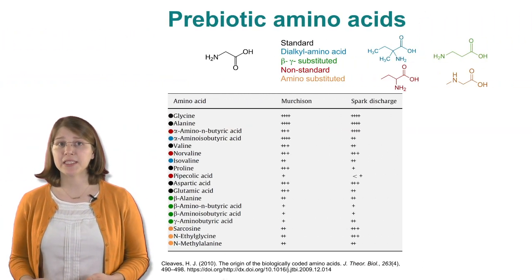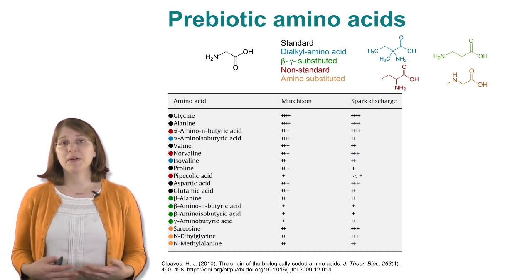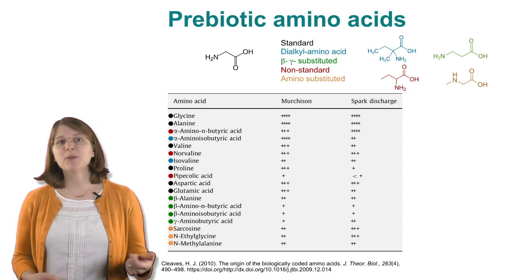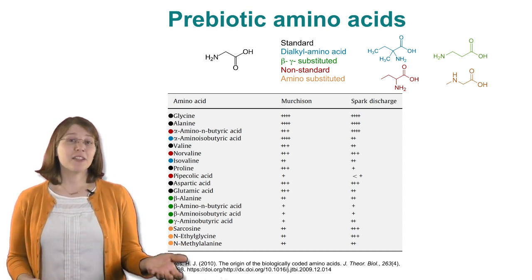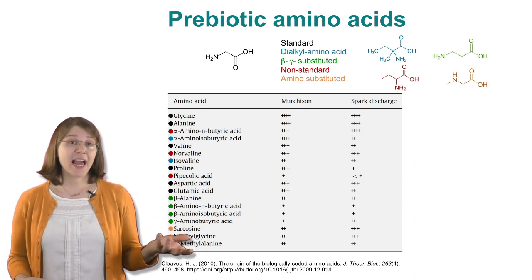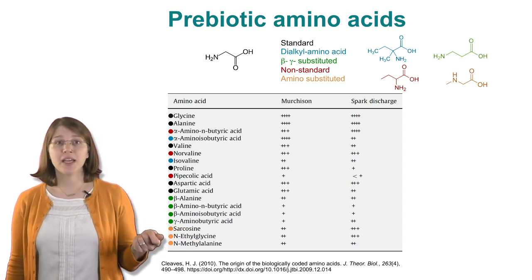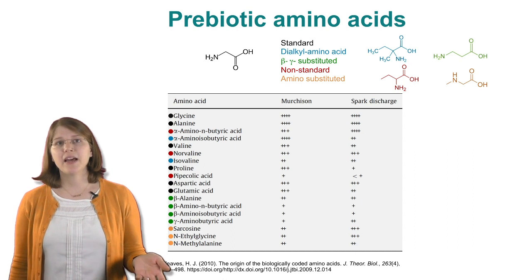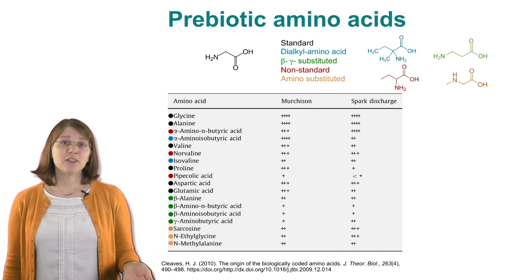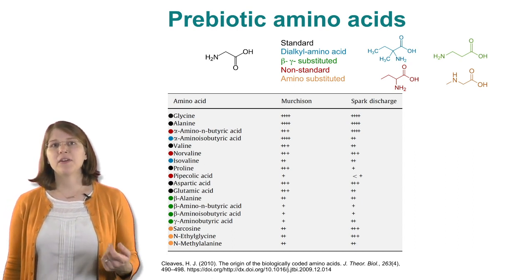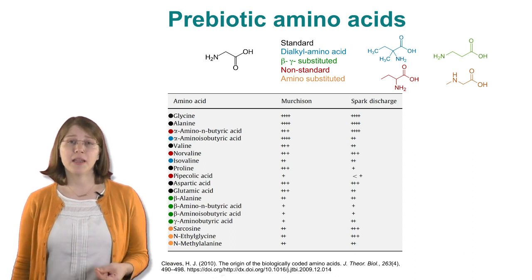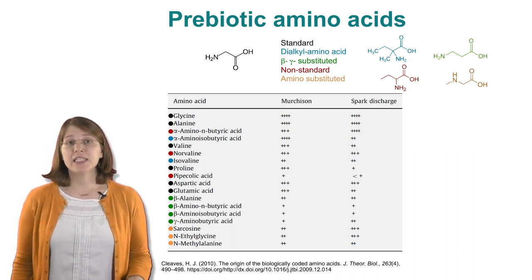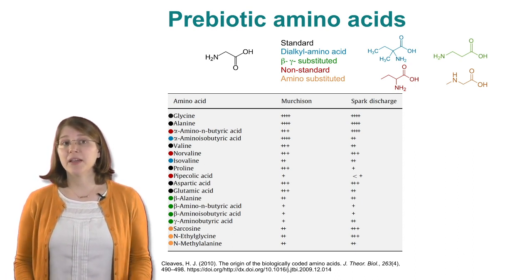If we deconstruct our prebiotic amino acids a little bit, we can see a bunch of different prebiotic amino acids found both in the Murchison meteorite and spark discharge experiments. In this table, the number of pluses indicates relative abundance. The image is color-coded: standard amino acids are black, dialkyl amino acids are in blue, beta and gamma substituted amino acids are in green, non-standard amino acids like norvaline are in red, and amino-substituted amino acids with an additional functional group on the amine are in orange. Many of these are found in higher abundances than the amino acids that were ultimately selected for.